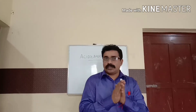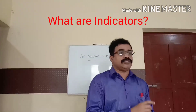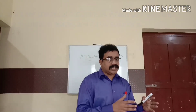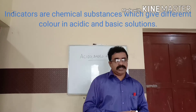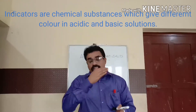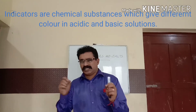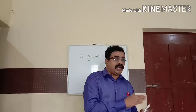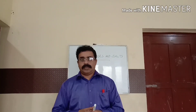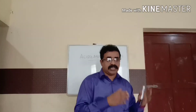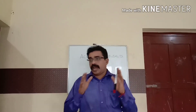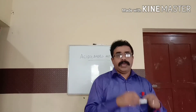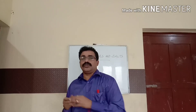The next topic you have to learn is about indicators. What are indicators? Indicators are chemical substances which give different characteristic color, or in some cases even odors, in acidic or basic solution. For example, litmus solution or paper.